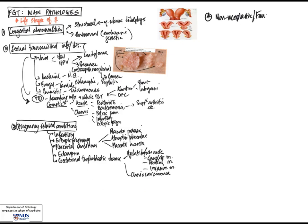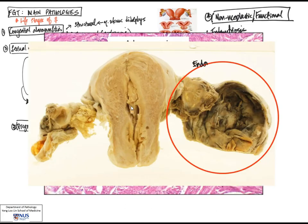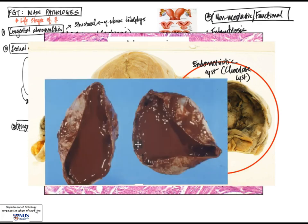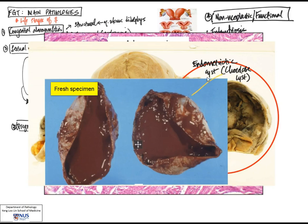The next group of conditions are non-neoplastic, sometimes thought of as functional conditions, but very common and important. Included in this group would be endometriosis and adenomyosis. Here is an example of a uterus with bilateral adnexal structures, showing cystic and enlarged ovaries. In particular, one ovary contains a cyst with a dark-colored inner lining — these are called chocolate cysts. In fresh gross specimens, they often look like they contain melted chocolate, and this is because of many cycles of bleeding and altered blood.